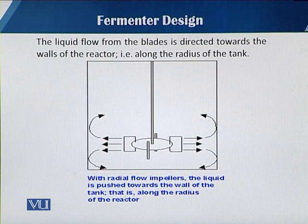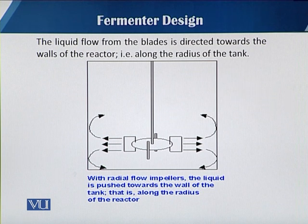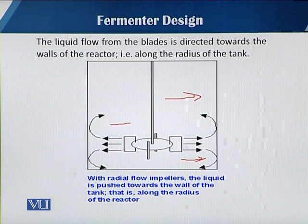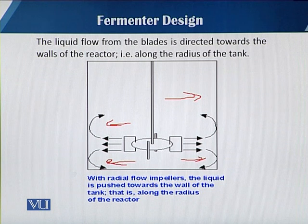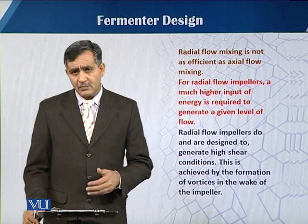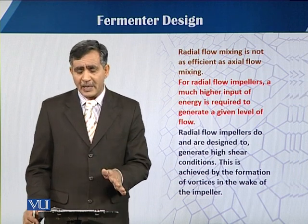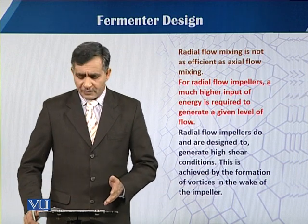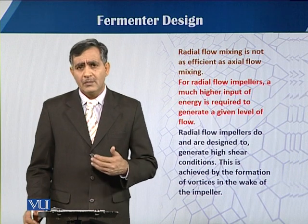In this slide you can see that with radial flow impellers, the direction of the medium while the impellers are agitating shows that the media is pushed toward the periphery, parallel to the radius of the fermenter. With the radial flow impeller, the liquid is pushed toward the wall of the tank along the radius of the fermenter. Radial flow mixing is not as efficient as axial flow, which is considered more efficient in comparison, although radial flow impellers have their own positive factors.